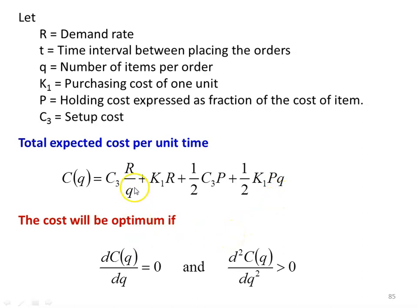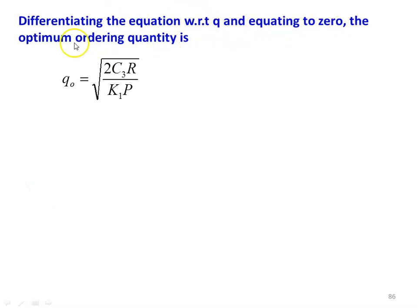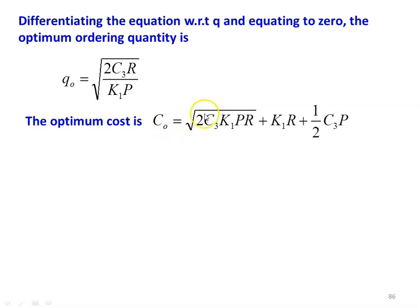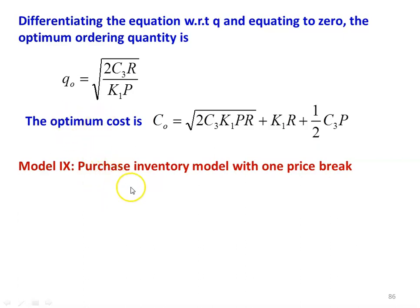The cost will be optimum if the first differentiation DC/DQ = 0 and D²C/DQ² > 0. Differentiating with respect to Q and setting equal to zero, the optimum ordering quantity QO = √(2C3R / (K1 × P)), and the optimum cost CO = √(2C3K1PR) + K1×R + (1/2)×C3×P. These are the basic equations to calculate the two parameters: QO (optimum quantity) and CO (optimum cost).